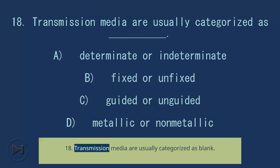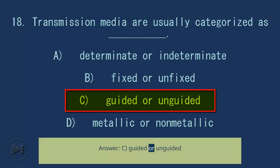Question 18: Transmission media are usually categorized as blank. A) determinate or indeterminate, B) fixed or unfixed, C) guided or unguided, D) metallic or non-metallic. Answer: C, guided or unguided.